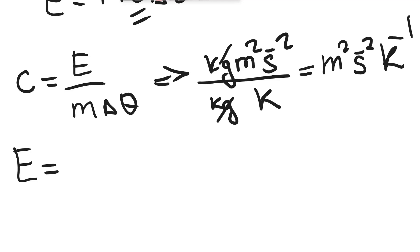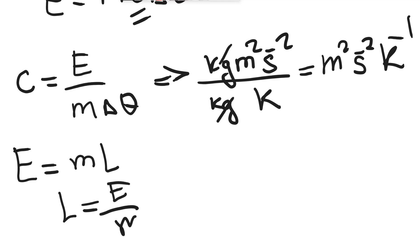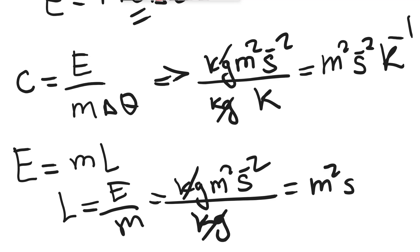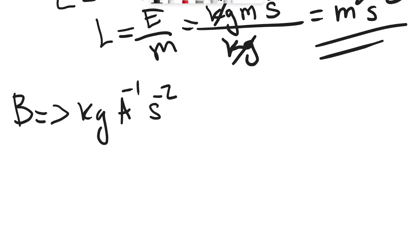Specific latent heat — energy equals mass times the specific latent heat, whether for vaporisation or fusion. So specific latent heat is energy per unit mass: kg m² s⁻² divided by kilograms. Those cancel, leaving meters squared s to the power of minus two.